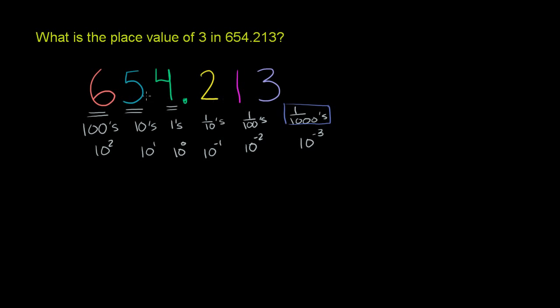But to make sure that we really understand what this means, I'm going to rewrite this number. We can rewrite this number as 600, right? We have 600, plus 5 tens, or you could say plus 50, plus 4 ones.